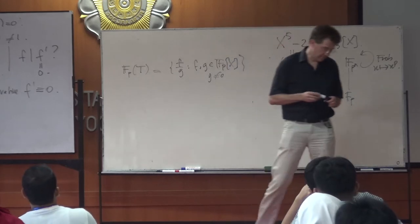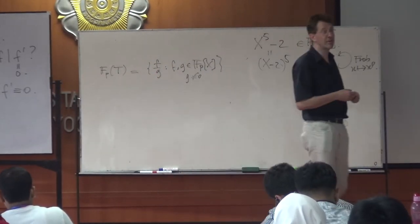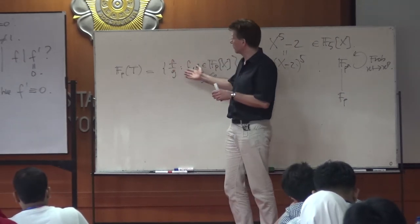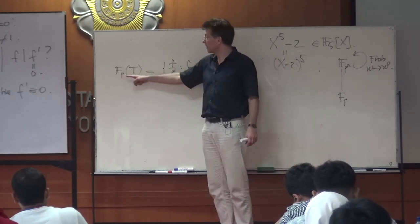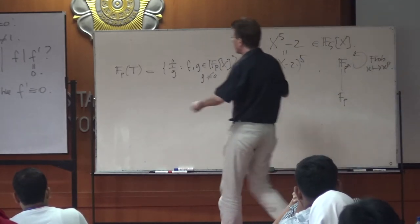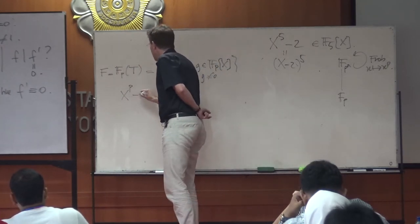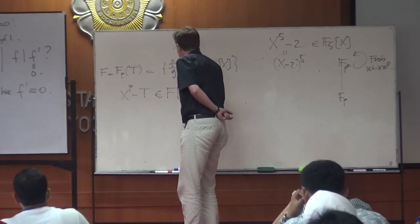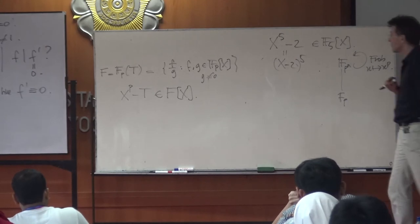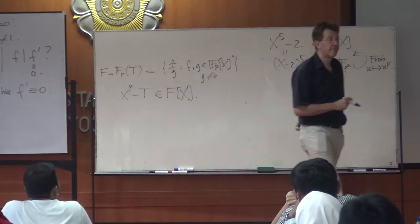This field F_p(T) has the property that not every element is a p-th power. If you take any rational function and raise it to p, you get a polynomial in T^p. So T itself is not a p-th power of anything in F_p(T). This means the polynomial x^p minus T in F[x] — where F = F_p(T) — is our candidate: we are trying to adjoin a p-th root of the transcendental T.